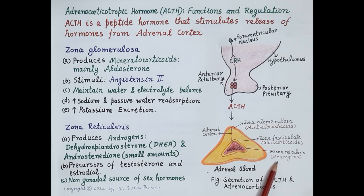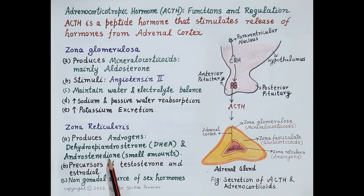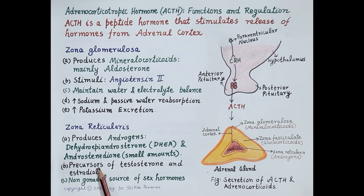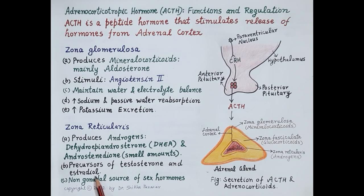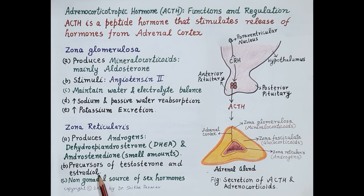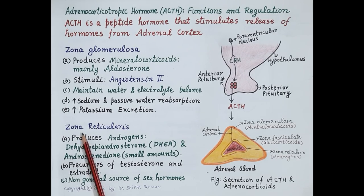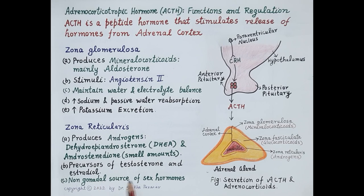This innermost thin layer is the zona reticularis — it secretes sex steroidal hormones called androgens. The main androgens secreted by this layer are dehydroepiandrosterone (DHEA) and androstenedione. Both are produced in very small amounts. These androgens are precursor hormones that are further converted into testosterone and estradiol. Their main function is to control libido and sex drive. Zona reticularis can be considered a non-gonadal source of sex hormones.